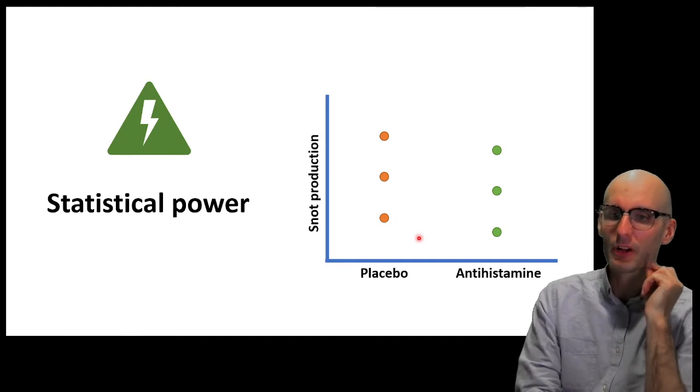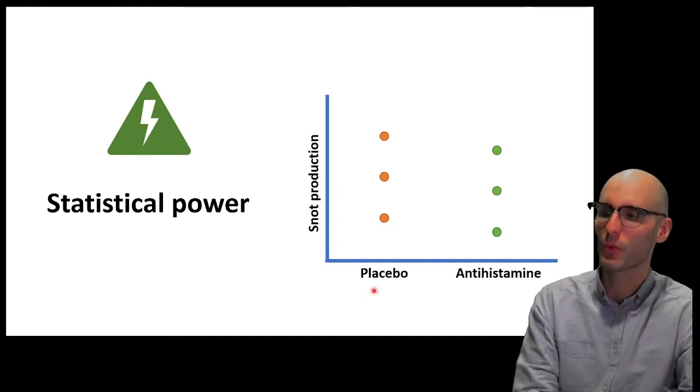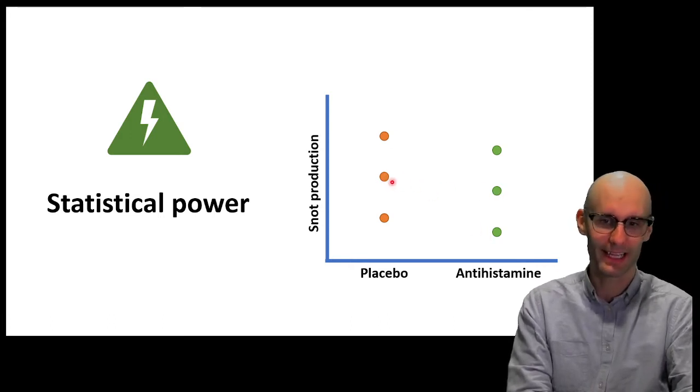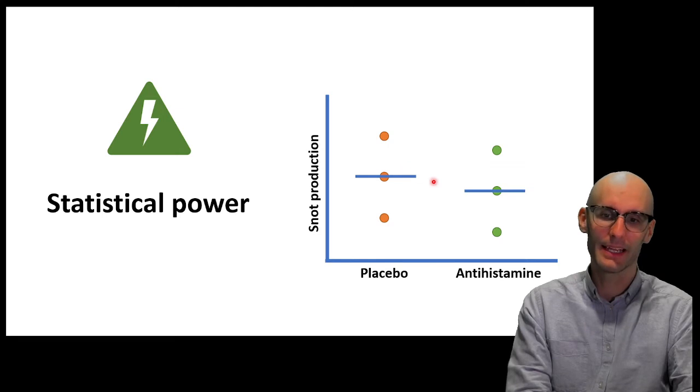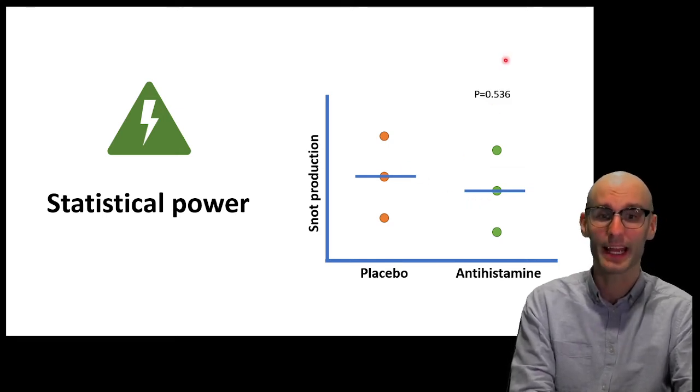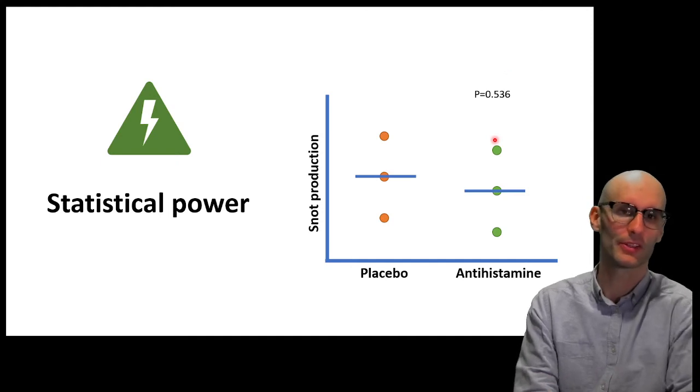So, we've got snot production on the y-axis. We've got placebo. And we've got an antihistamine. Now, we can see that there's some decline there. But if we run the... Here's our means there. That's the statistical model that we're running over this data. And then we look at the p-value. It's not statistically significant.